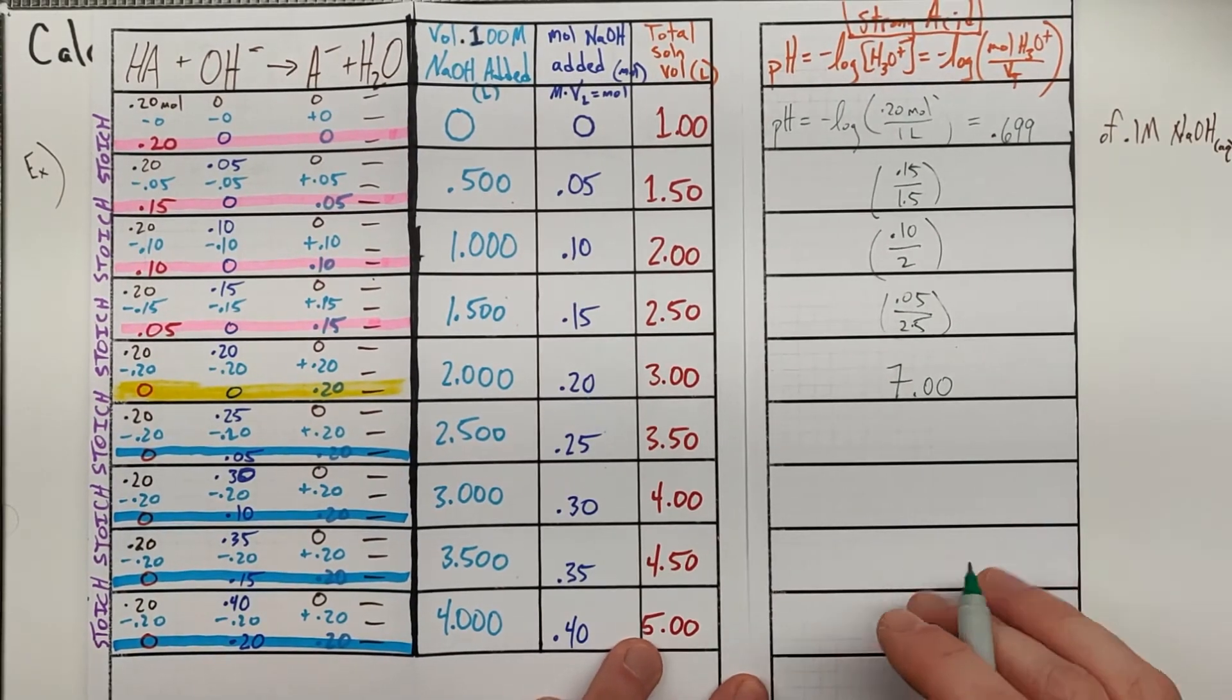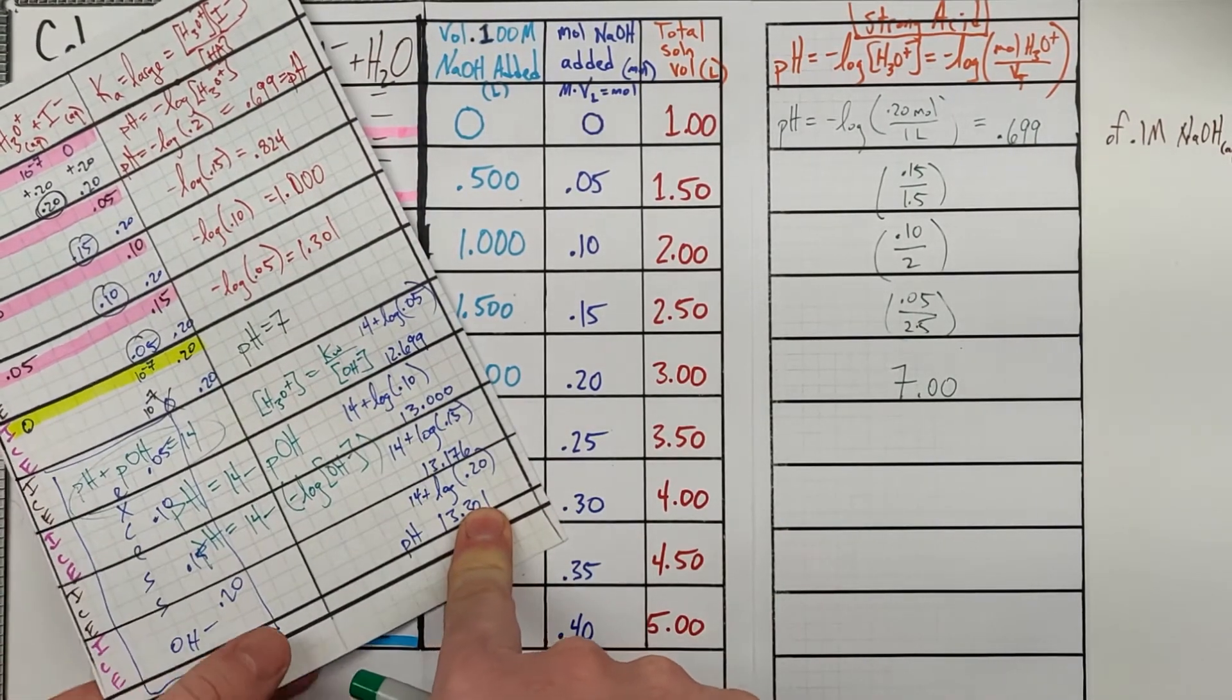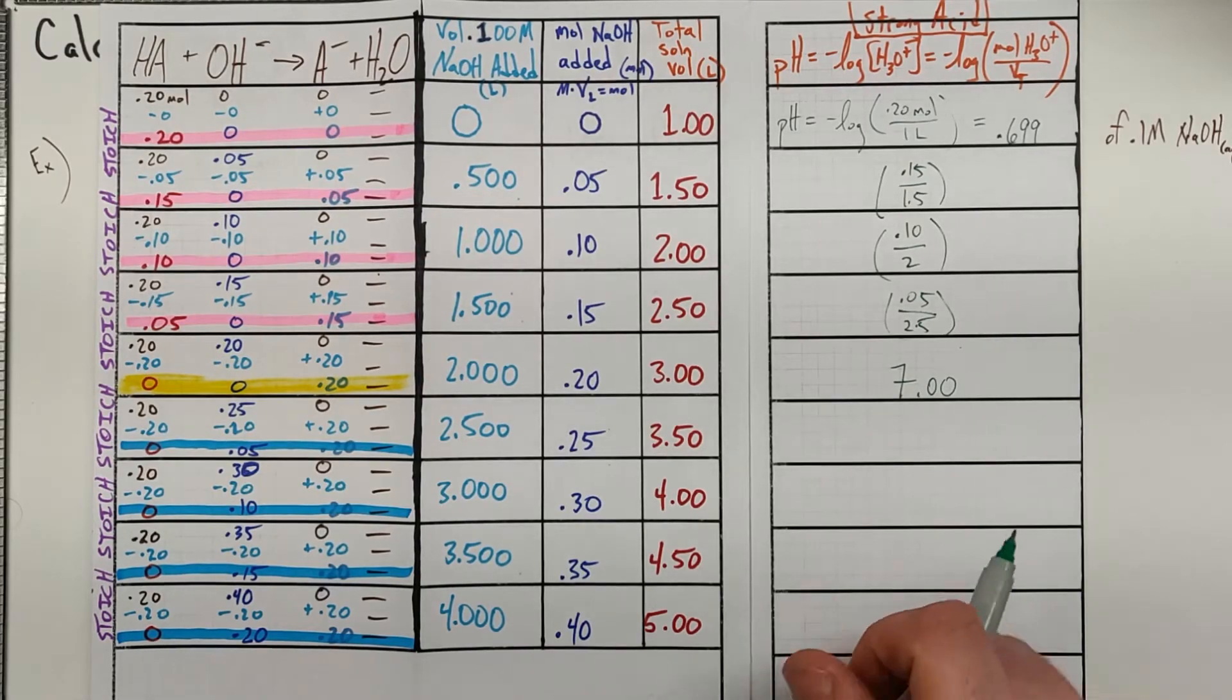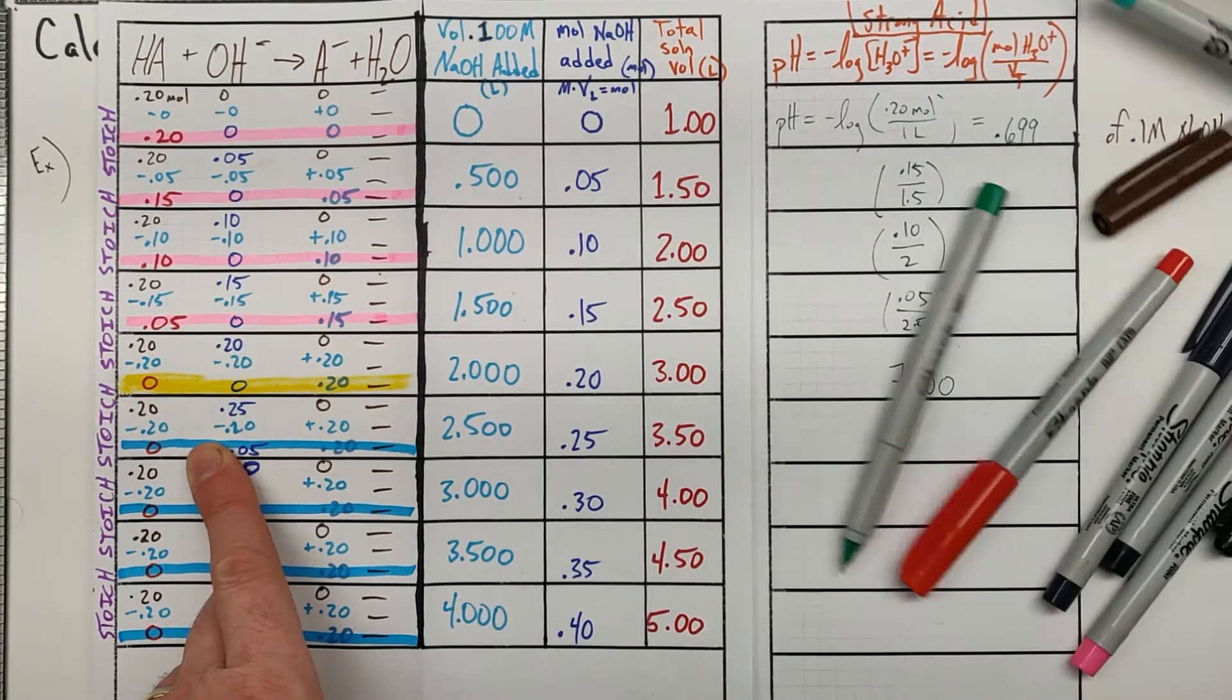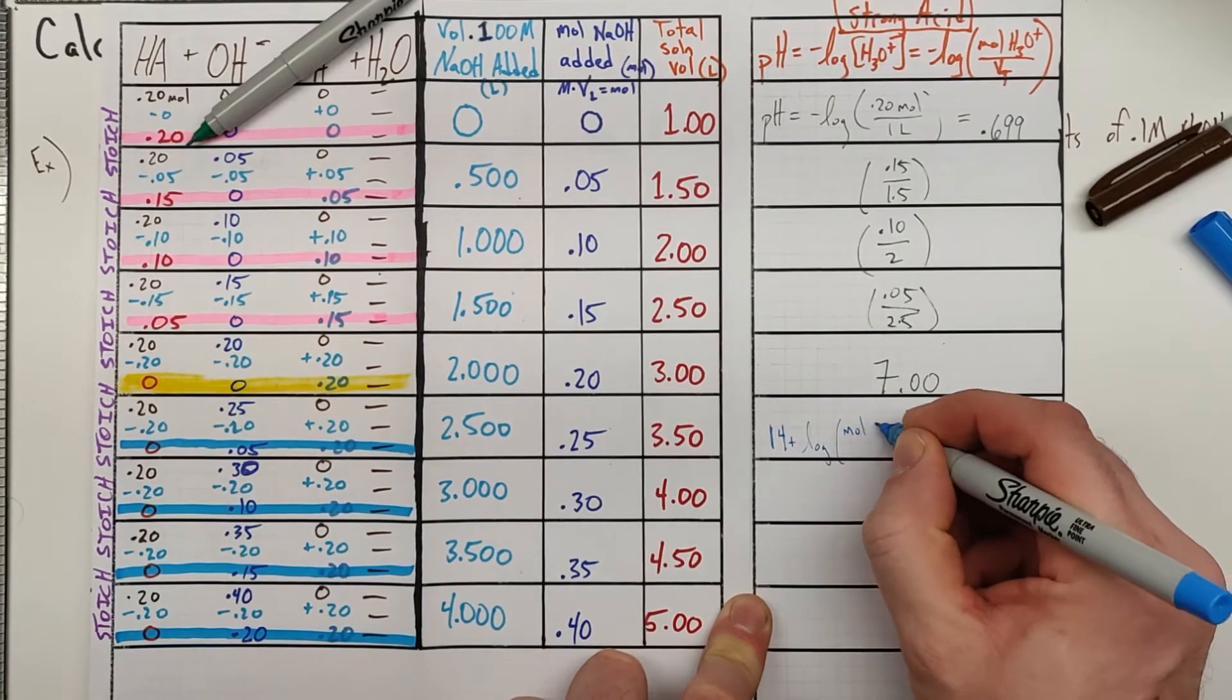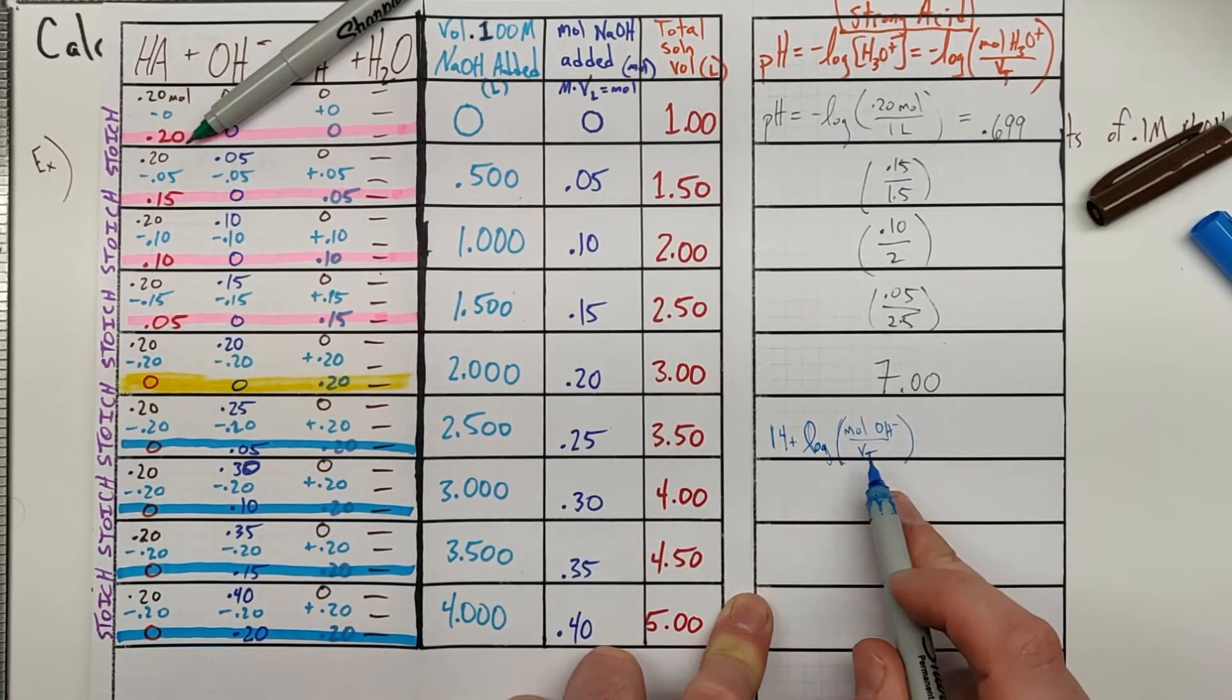Down here we're going to follow the same idea, which is we have excess base. So our pH calculation is going to be based on the hydroxide ion concentration and working backwards from there. Down here in the basic region, the pH we're going to end up calculating as 14 plus the log of our moles of OH- over the total volume at that point in time. Since we have excess strong base, that is going to determine our pH and we can use the hydroxide ion concentration at that point in time.